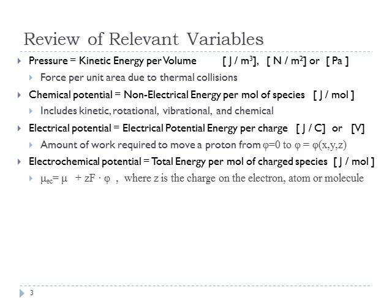What we're calling 'potentials' so far includes pressure. You can think of pressure as a potential. The electrical potential is the electrical potential energy per charge, with units of joules per coulomb — also known as volts. The chemical potential has units of joules per mole. The electrical potential is the amount of work required to move a singly charged positive species from voltage zero to some voltage at position x, y, z.